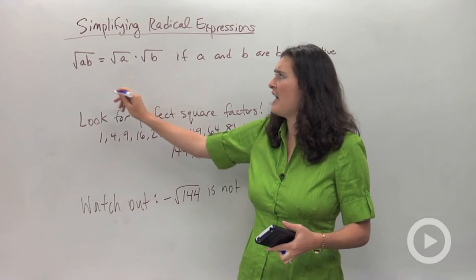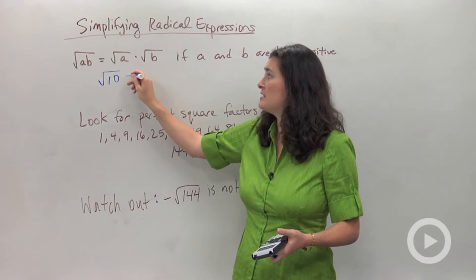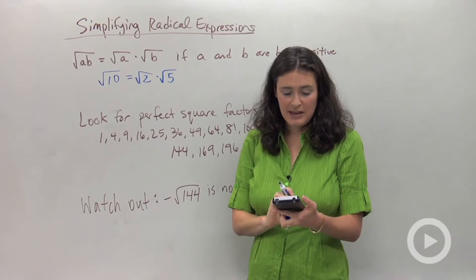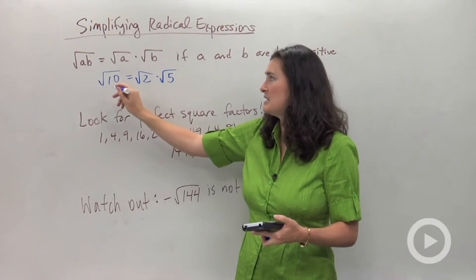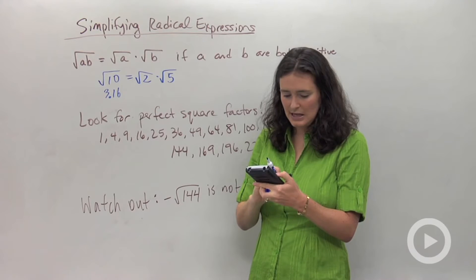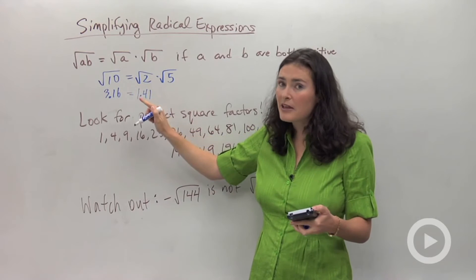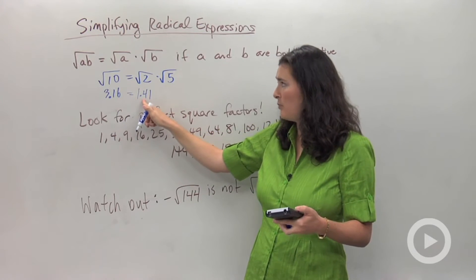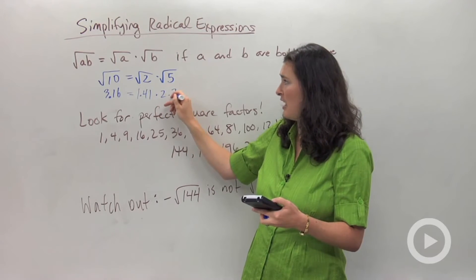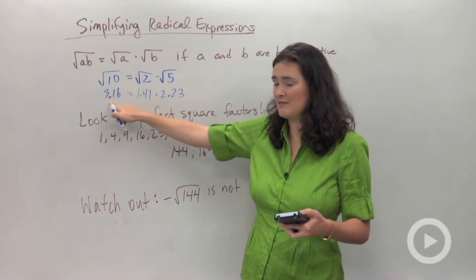For example, the square root of 10 is equal to the square root of 2 times the square root of 5. If you don't trust me, grab a calculator and check it out. The square root of 10 is the decimal 3.16, and the square root of 2 is 1.41. I'm claiming that 3.16 equals 1.41 times 2.23 — that's the square root of 5. It's a tiny bit off because I'm rounding, but this decimal times that decimal gives that answer.